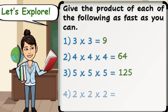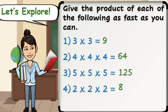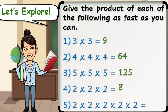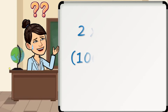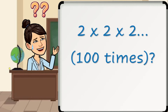Number 4: 2 times 2 times 2. The answer is 8. Number 5: 2 times 2 times 2 times 2 times 2. The answer is 32. What if I asked you to give me the product of 2 when multiplied by itself 100 times? Will you still solve it manually just like what we did with our previous examples? Or do you think there's an easier way to write down this expression mathematically?